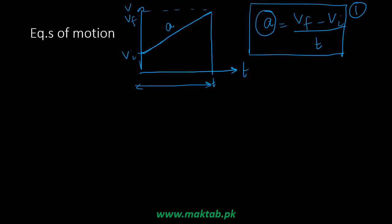You need to understand that VF minus VI equals A times T. This is the velocity component due to acceleration. We have an initial velocity, and if we add this component, we get the final velocity.